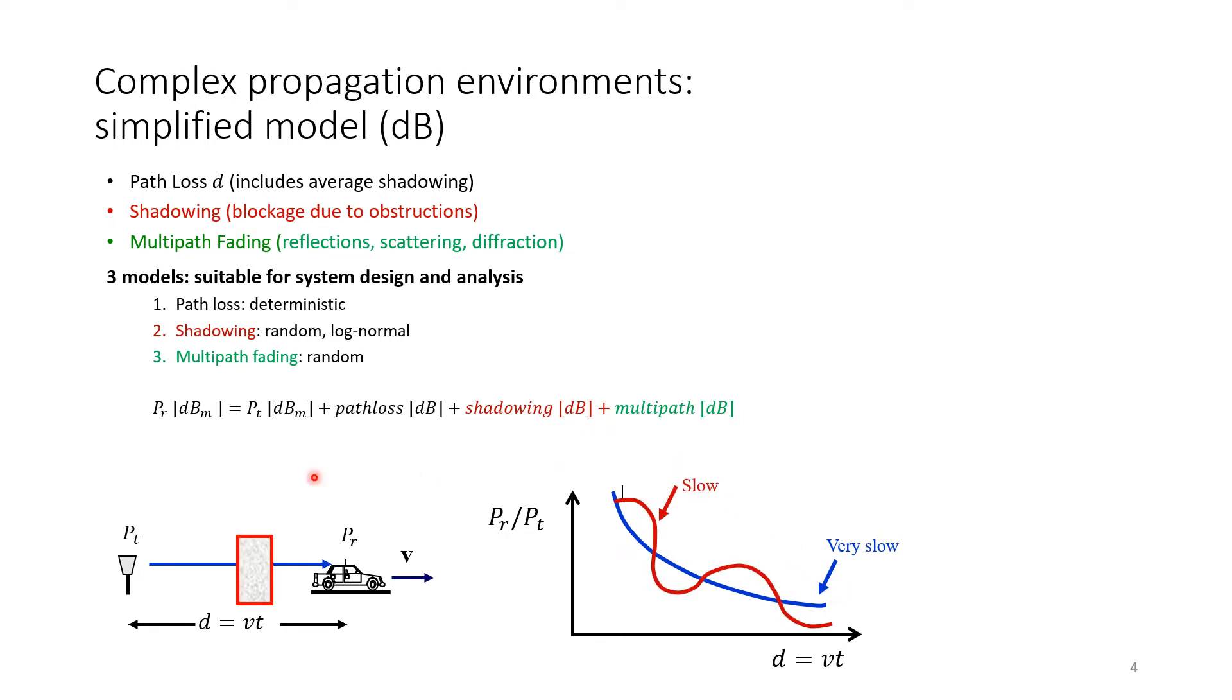However, in real life, we could also have obstacles. Obstacles can get in and can get out of our way. There will be some variation on top of this blue curve. This is referred to as shadowing, because you will be in the shadow of the obstacle. Shadowing is caused by blockage or obstruction, where path loss is just the average of power decay due to distance. Path loss includes the average shadowing, so if there are small shadowing in and out, this would be included because this is the average. The variation of the shadowing is captured here in the red curve.